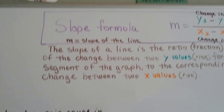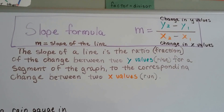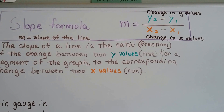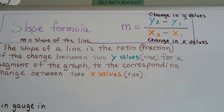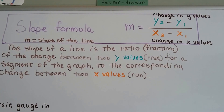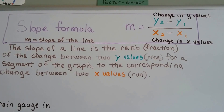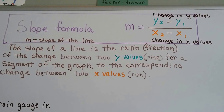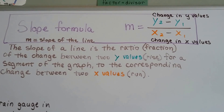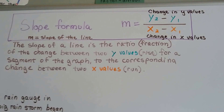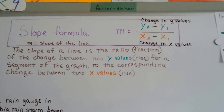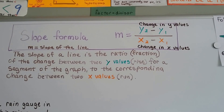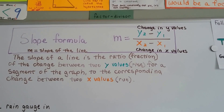So we know our slope formula from our previous videos. The slope is m, and we find it by finding the change in y-values — y2 minus y1 — and the change in x-values — x2 minus x1 — for two points on a line. The slope of a line is the ratio, a fraction of the rise to the corresponding run.